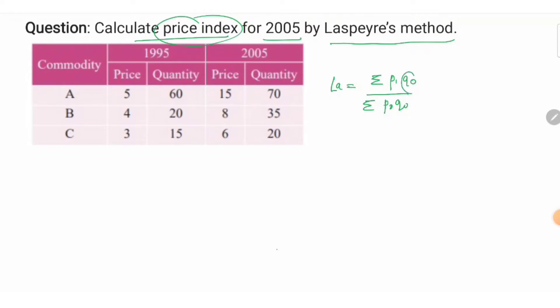Here Q0 is simply the quantity of the base year and P1 and P0 are the prices of the current and base year. So to find out the price index of the Laspeyres method we use our weight as Q0, the quantity of the base year.